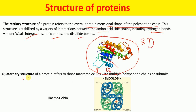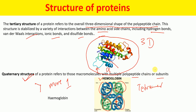Now let's talk about the quaternary structure of the protein. Quaternary structure refers to macromolecules with multiple polypeptide chains or subunits — more than one polypeptide chain. As shown here, this is an example of hemoglobin, which has four different subunits — making it a tetramer. Two subunits is a dimer, three subunits is a trimer, and so on. In all other structures we have only one polypeptide chain, but in the quaternary structure we have more than one polypeptide chain or subunit.